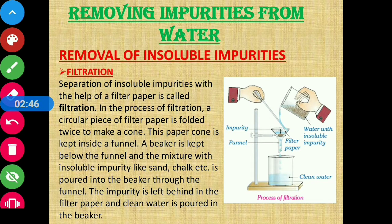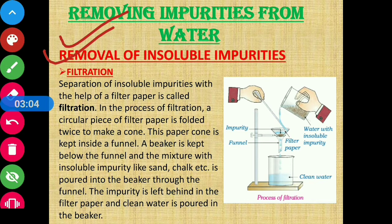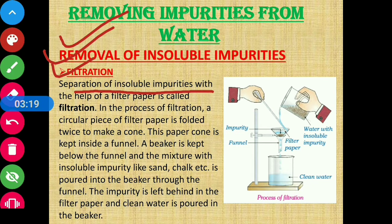Since those impurities are not fit to consume, we have to remove them from water. Our next discussion is on removing impurities from water. First we are going to discuss the removal of insoluble impurities. The first method is filtration — separation of insoluble impurities with the help of filter paper is called filtration.